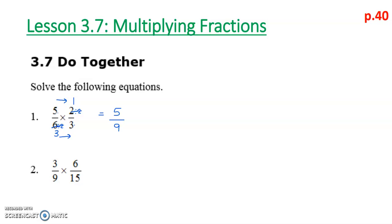For number 2, we look across: 3 and 15 are both divisible by 3, so we cross-cancel them to get 1 and 5. On the other side, 6 and 9 are both divisible by 3, so we cross-cancel to get 2 and 3. Now multiply: 1 times 2 is 2, and 3 times 5 is 15. Our answer is 2 fifteenths.